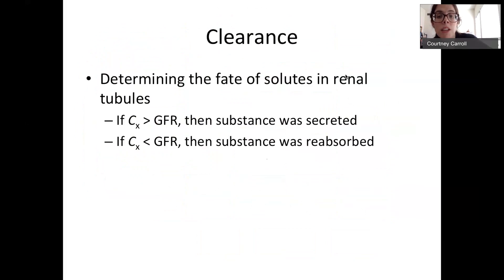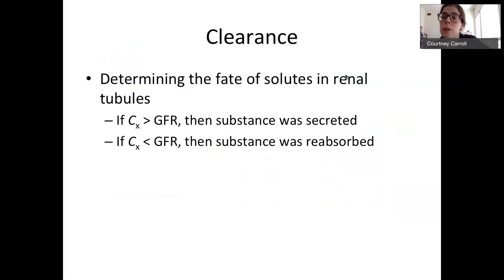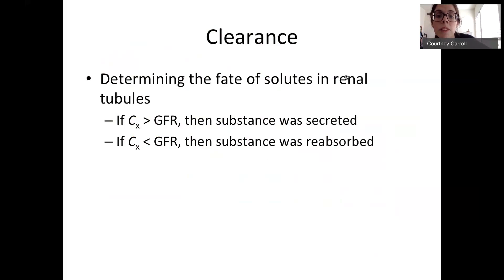When determining the fate of solutes, we look at clearance. If your clearance is greater than your filtration rate, then some of it had to be secreted — it came from the blood back into the filtrate. If the clearance rate is less than the filtration rate, then it was reabsorbed. When confused, use glucose as your example: glucose has a clearance rate of zero because none is found in the urine and all of it is reabsorbed. Zero is less than the filtration rate, so all of that substance was reabsorbed.